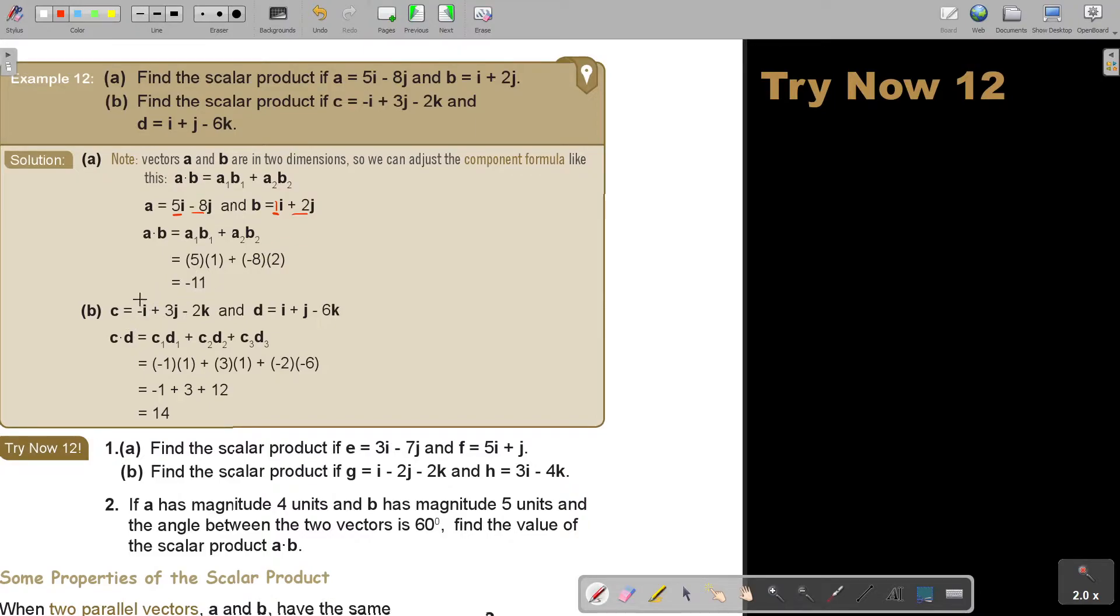And now, that's all they are asking me. They didn't ask me to find the angle. So, find the scalar product. Again, I do the same. This was two-dimensional. This is three-dimensional. So, this is negative 1 and 1. And this is 3 and 1. And this is negative 2 and negative 6. And then, I just simplify, and I got 14.